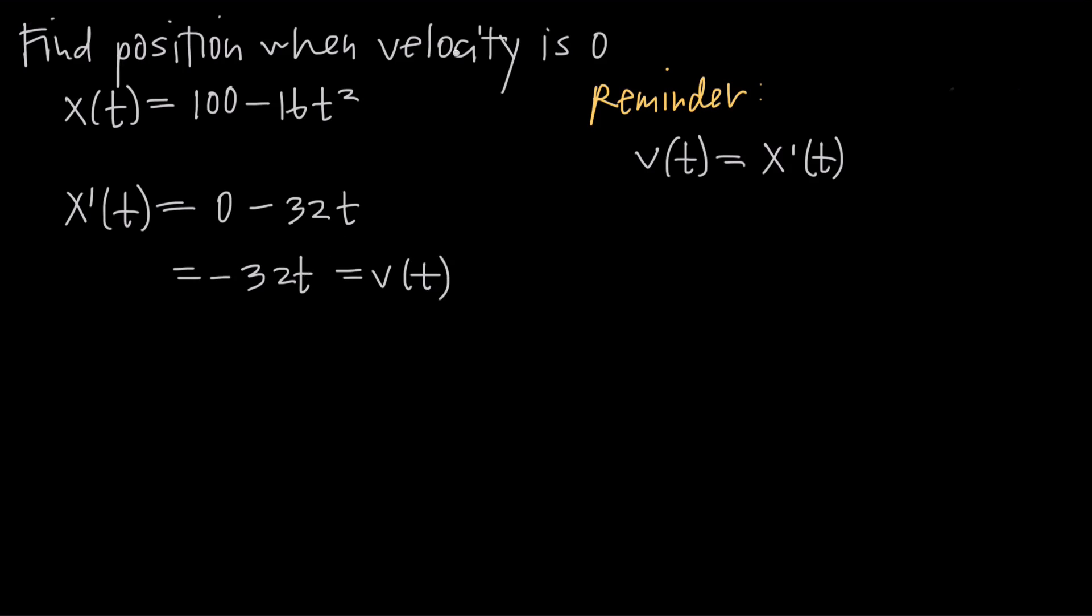But remember we're interested in the point at which velocity is equal to 0. So in order to solve for the value of t that gives us a velocity of 0, we have to plug in 0 for velocity. So what we end up with then is 0 equals negative 32t, and we want to solve this for t. So we'll just divide both sides by negative 32, and we see that t is equal to 0.